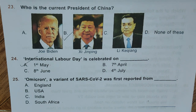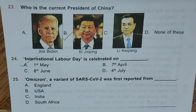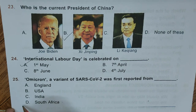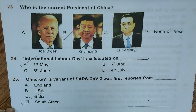Question 25: Omicron, a variant of SARS-CoV-2, was first reported from — A. England, B. USA, C. India, D. South Africa. Answer is D, South Africa.